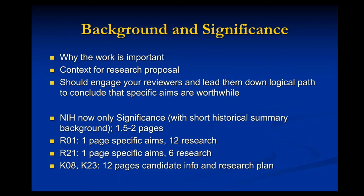NIH proposals — R01s, R21s, etc. — now only include significance; they don't call it background and significance anymore. Many reviewers may not be familiar with all of the research done in your particular field, so you still need to give some overview of the research already done. Try to keep this whole section to about a page and a half to two pages out of the 12 pages allowed for R01s and six pages for R21s.